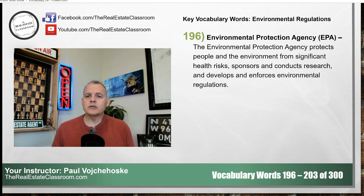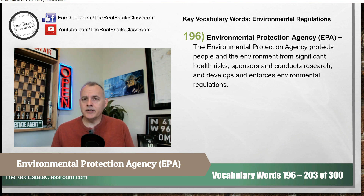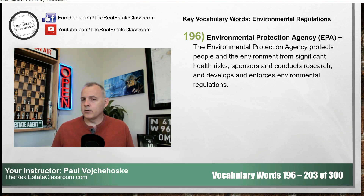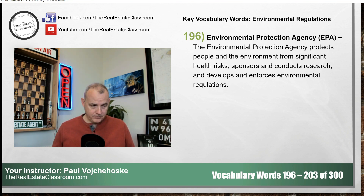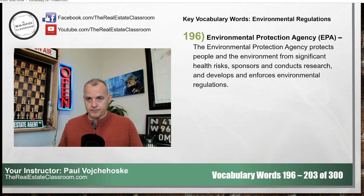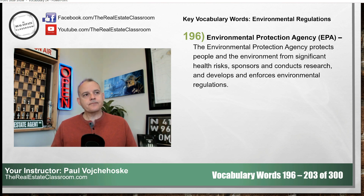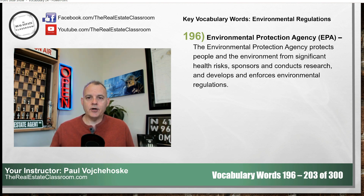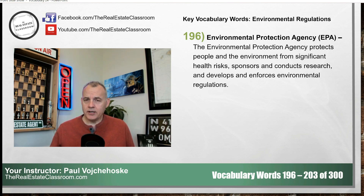Our first key term we're going to talk about is the Environmental Protection Agency, commonly referred to as the EPA. The EPA is a federal organization and their job is to write environmental regulation and then enforce those regulations. So they are the enforcement branch for the federal government regarding environmental issues. You've got to know that for your real estate exam because almost everything — every one of these laws we're talking about in this video — it is the EPA that's tasked with enforcing those laws.